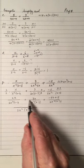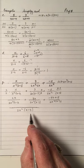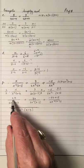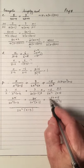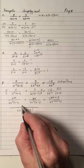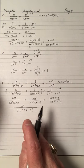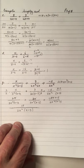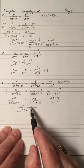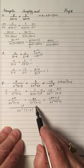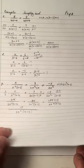Expanding the numerators: 2 times (x²−3x) gives 2x²−6x... then 2x for the second, and negative 5 times (x−3) gives −5x+15. Adding the x terms: 2x plus 3x minus 5x equals 0. So the x terms cancel, leaving just 15 in the numerator over 2x²(x−3). The factors of 15 are 3 and 5, and it cannot simplify further.